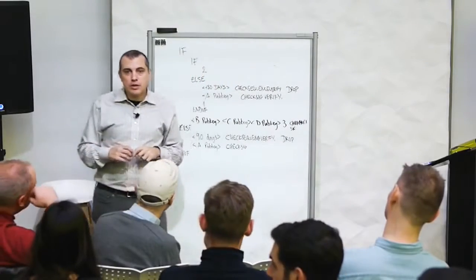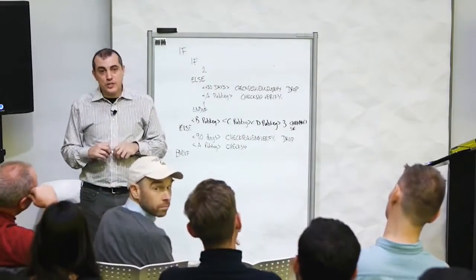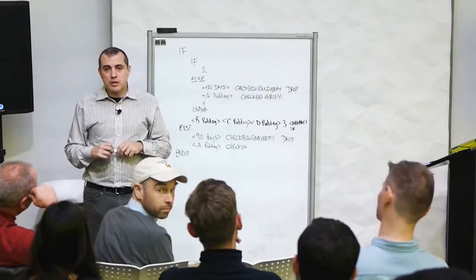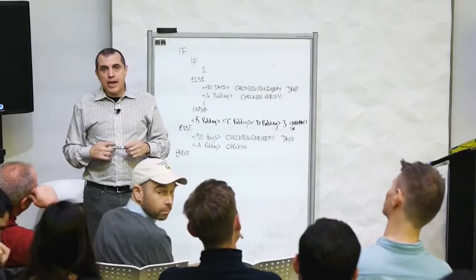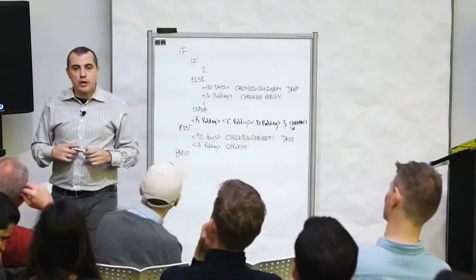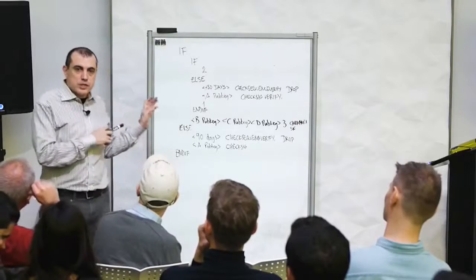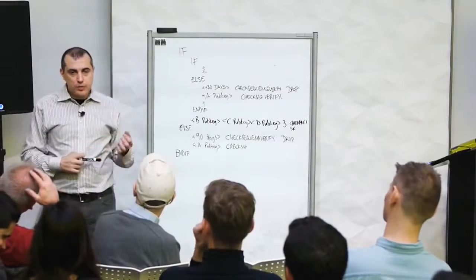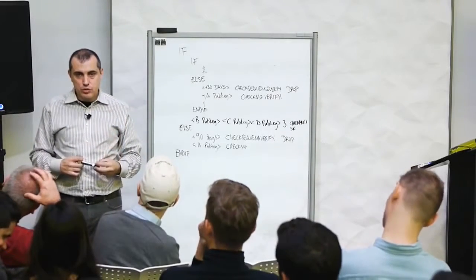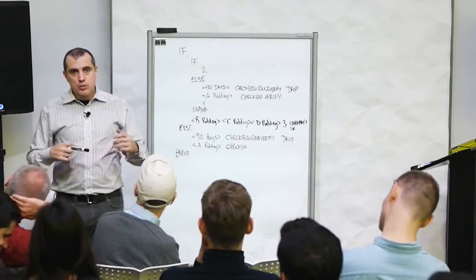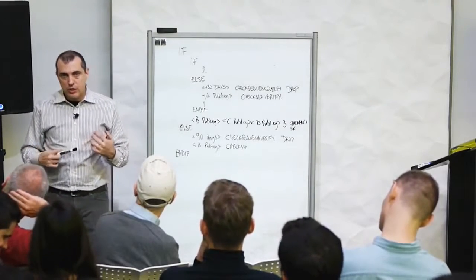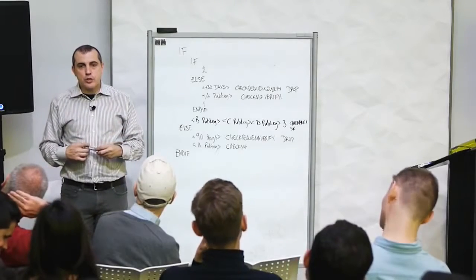This stuff reminds me of coding in assembly. Yes, it is very similar to coding in assembly. Is there any movement towards making a compiler? No, because you can't make a compiler into a higher-level language for the simple reason that this is not Turing-complete, it is missing one fundamental construct, which is there is no loop construct. There is no recursion construct either. Without a loop or recursion construct, you have a language that is not Turing-complete.